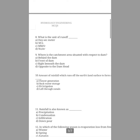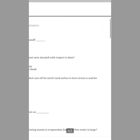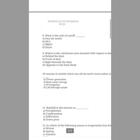Question number ten: the amount of rainfall which runs off the earth's land surface to form streams is used for what? The options are power generation, backwater storage, pit irrigation, lift through the canals. The answer is power generation, because about two-thirds of rain is returned back to the atmosphere and one-third is returned back to the ocean. The remaining rainfall which runs off the land surface to form streams and rivers is used for power generation.